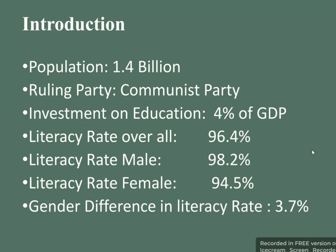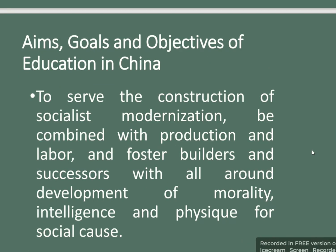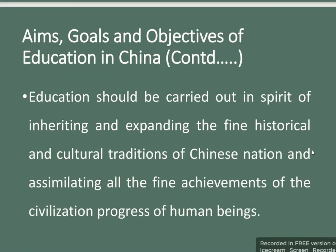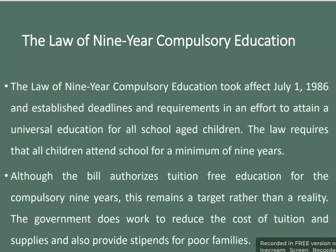The aims and objectives of education in China are to serve the construction of socialist modernization, with education combined with production and labor, and to foster builders and successors with all-around development of morality, intelligence, and physique. Education should be carried out in the spirit of inheriting and expanding the fine historical and cultural traditions of the Chinese nation. The nine-year compulsory education took effect from July 1st, 1986, requiring all school-age children to attend school for a minimum of nine years. Although the law authorized tuition-free education for the compulsory nine years, this remained a target rather than reality. The government works to reduce the cost of tuition and supplies and provides stipends for poor families.